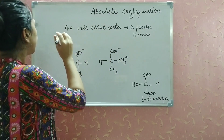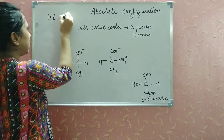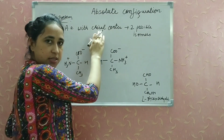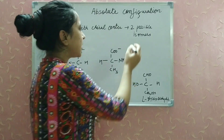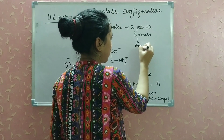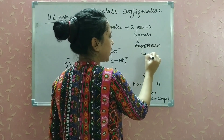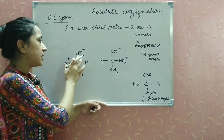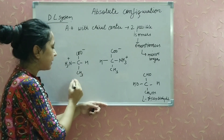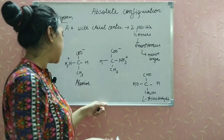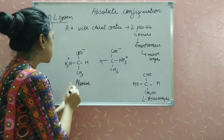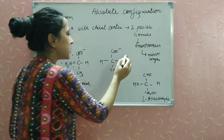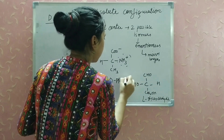We start with the absolute configuration of amino acids. The first system is known as the DL system. An amino acid which has a chiral center — meaning an asymmetric carbon — gives two possible isomers, and these two isomers are known as enantiomers. Enantiomers are mirror images of each other. For example, in alanine — COO negative, NH3 plus, CH3, H — when the NH3 plus group is on the left side it is L-alanine, and when it is on the right side it is D-alanine.